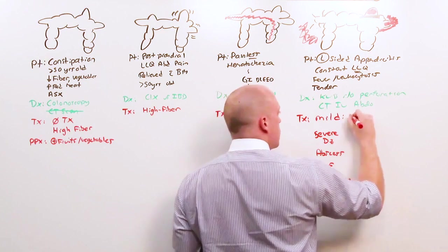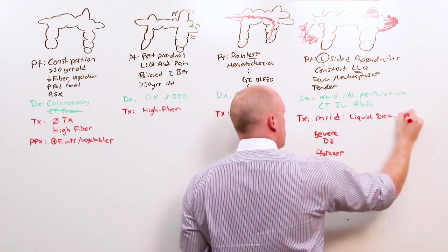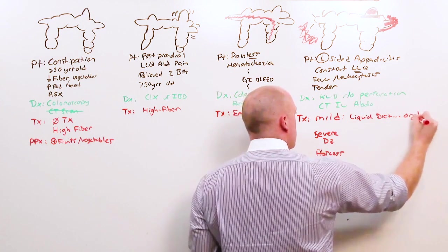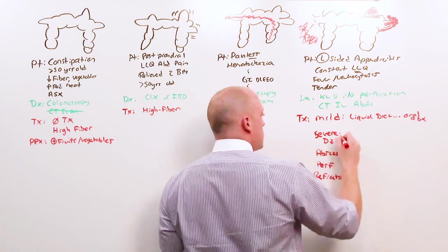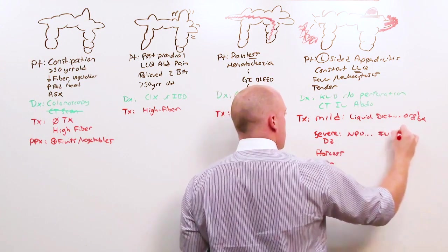In mild disease, they go on a liquid diet and try oral antibiotics. For severe disease, they are NPO and get IV antibiotics. These people get admitted.